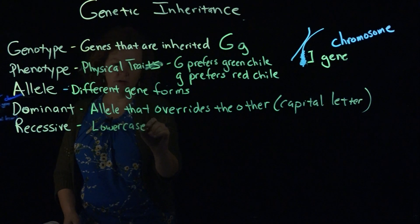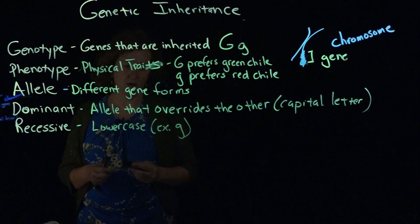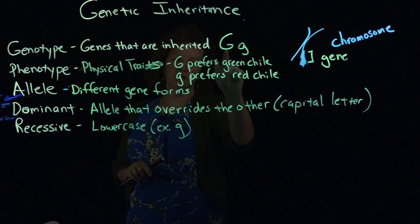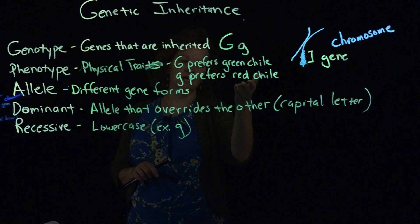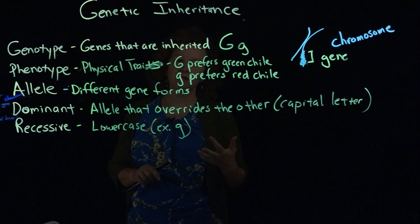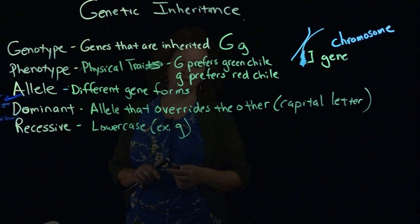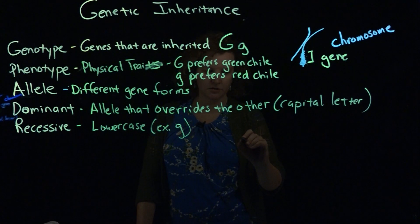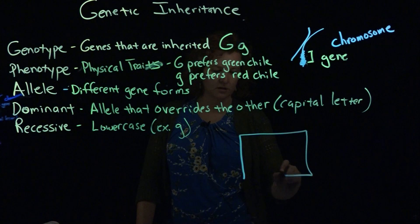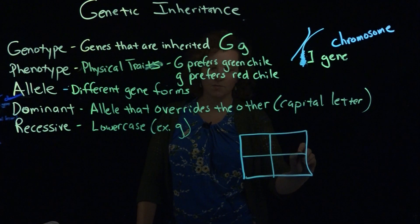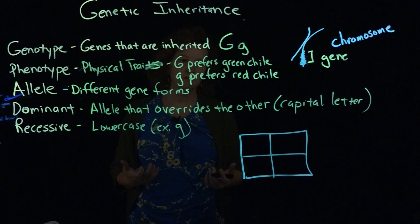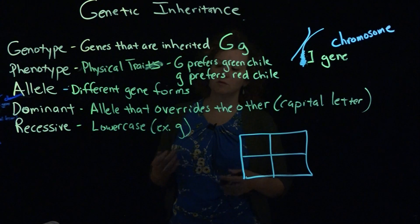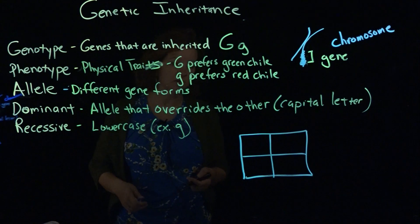The recessive allele is typically specified by a lowercase letter — in this example, the lowercase g. So if an individual has both an upper and lowercase G, meaning they carry both green chili and red chili allele types, the physical outward trait you're going to see is green chili preference. We can set up Punnett squares to track the likelihood that certain traits will be passed down — especially important for disease alleles, where you'd need to know if it's dominant or recessive.